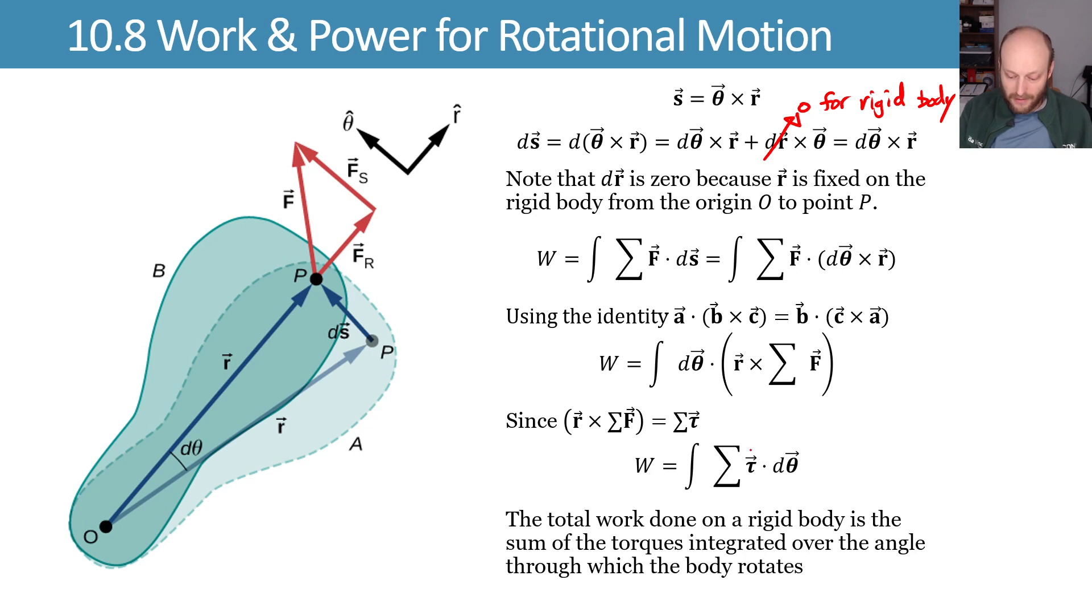If you have a constant torque, then you can just take that sum of the torques out front and you just get torque times delta theta.